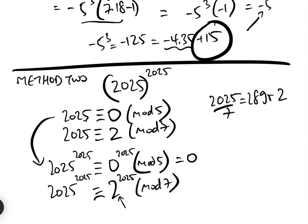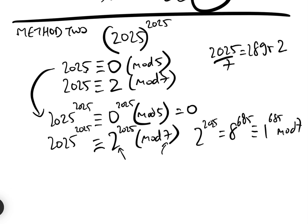Well, clearly 2 cubed satisfies that. So 2 to the 2025 equals 8 to the power of 685, which mod 7 equals 1 to the power of 685 mod 7. And so therefore, we have the answer that 2025 to the 2025 is 0 mod 5. And 2025 to the 2025 is 1 mod 7.